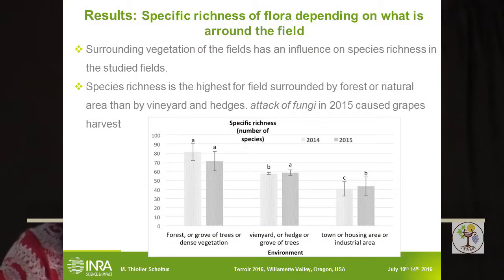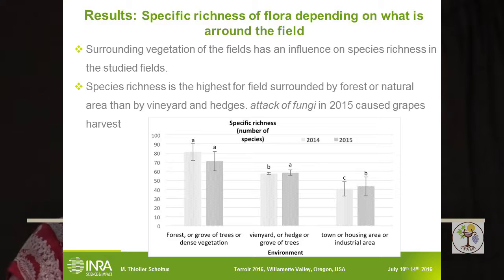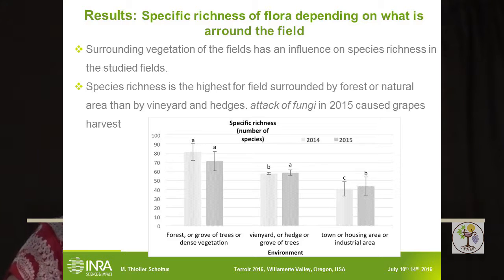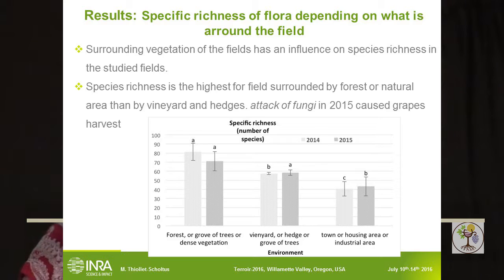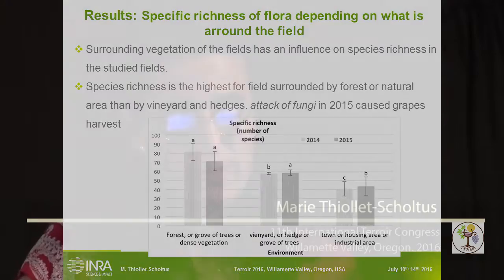An important finding for our database: in the survey questionnaire, we asked about what surrounds the field. We identified three types of surrounding environment: forest and grove, vineyard, or town and housing area. There is a significant impact of surrounding environment on flora richness. We demonstrated this with our database, and it is important information for providing agronomic advice to wine growers.